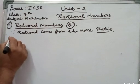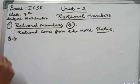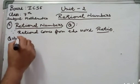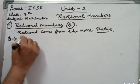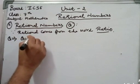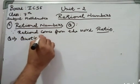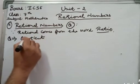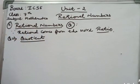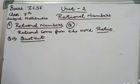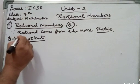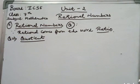You will ask: where does this Q come from? This Q comes from the word 'quotient'. You have read 'quotient' in division — from that word 'quotient', the letter Q has been taken. The word 'rational' comes from 'ratio', so they are called rational numbers.